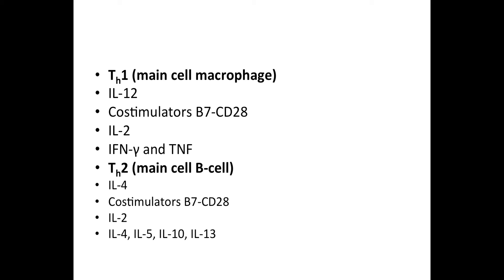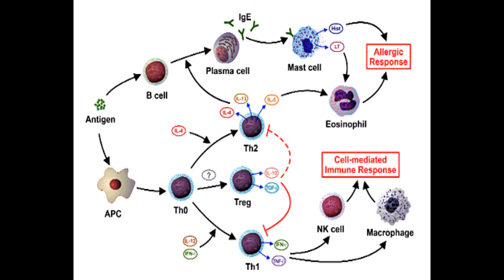As mentioned, the two major subtypes of T-helper cells are Th1 and Th2. Th1 mainly works on macrophages, while Th2 mainly focuses on B-cells and plasma cells. As shown in this slide, your antigen-presenting cells are exposed to a pathogen and present antigens via MHC Class 2 to T-helper cells called ThO — also called null or naive T-helper cells — which are essentially undifferentiated T-helper cells.